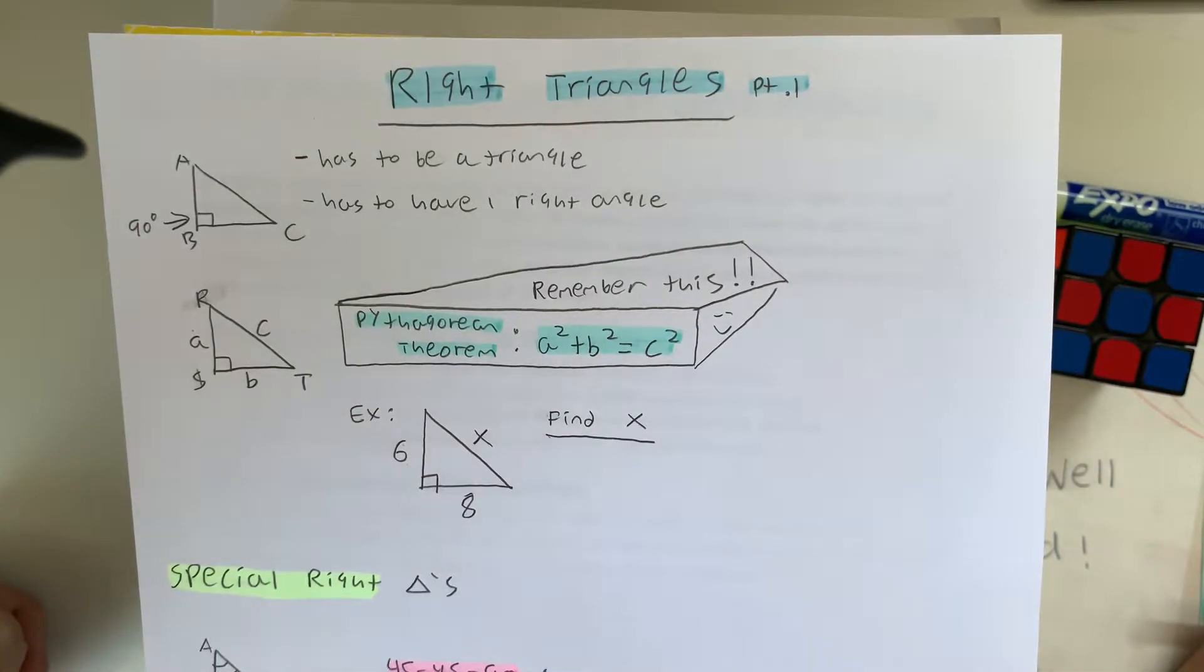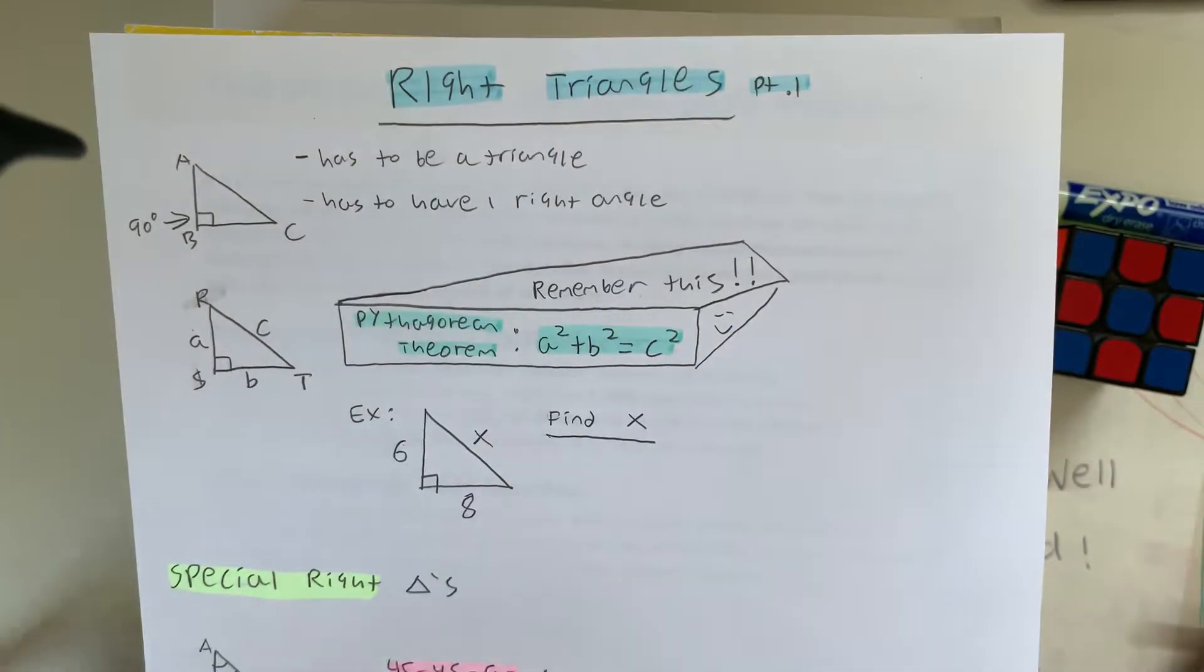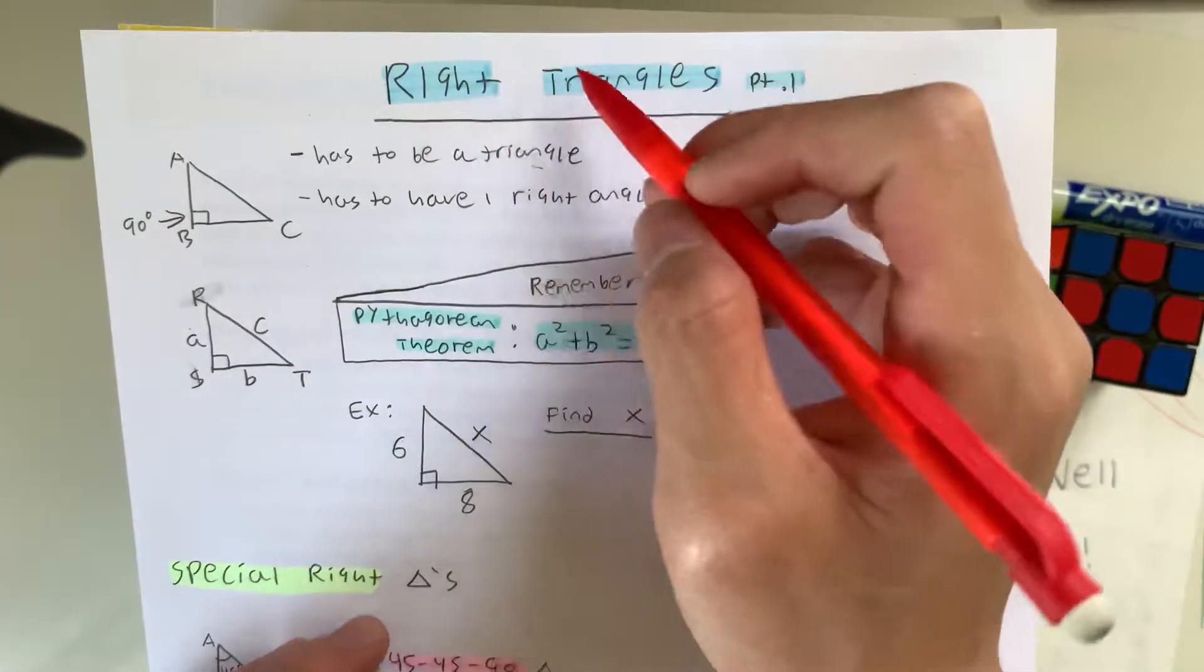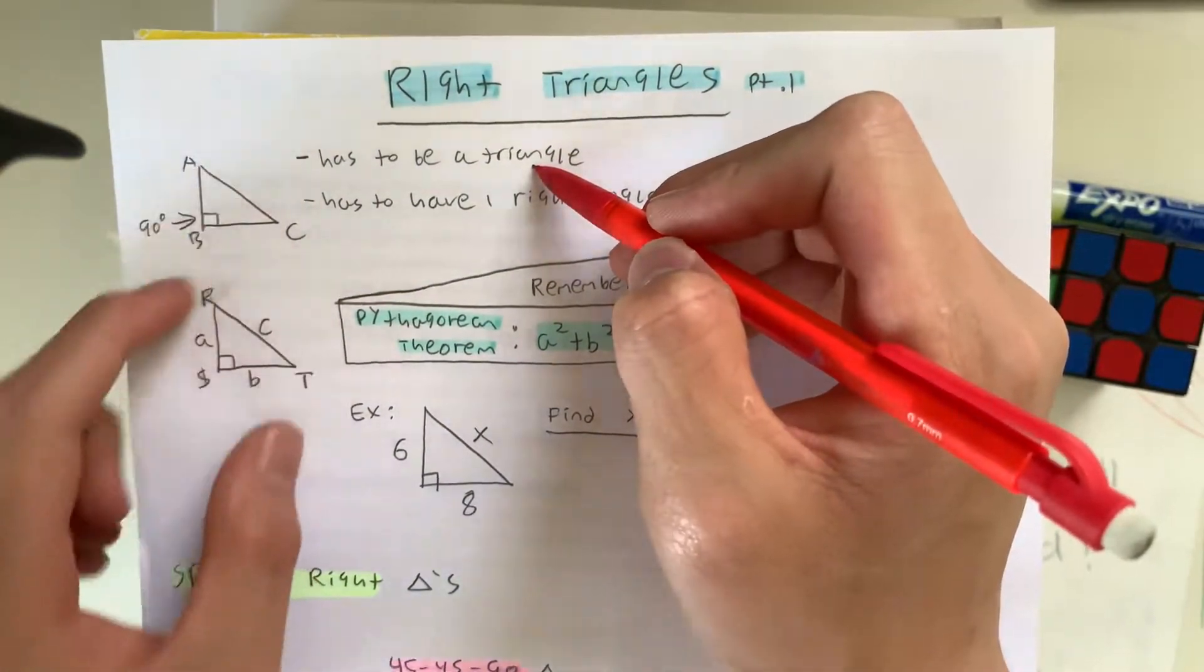Alright guys, so in this video you're going to learn about right triangles, and this is probably part one. So what is a right triangle? Well, for one, it's called a right triangle because it is a triangle with three sides, right?